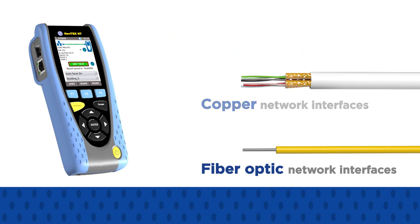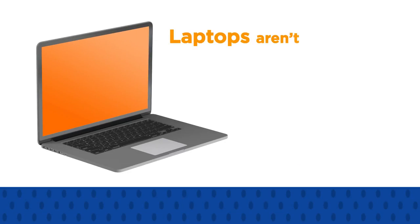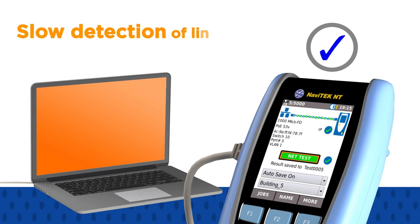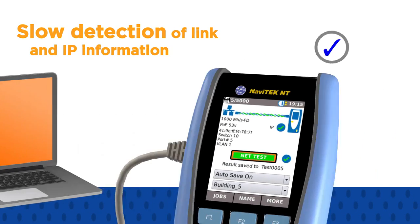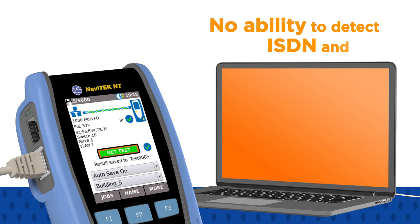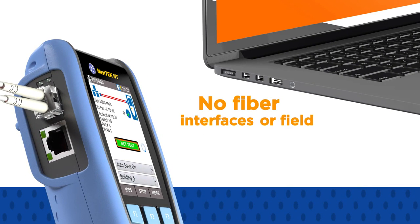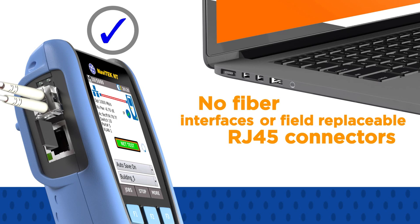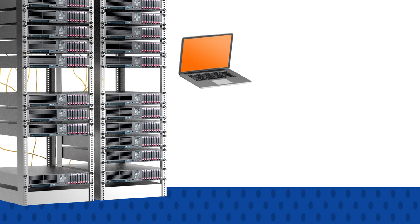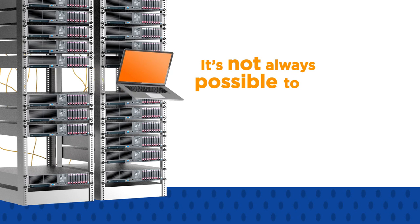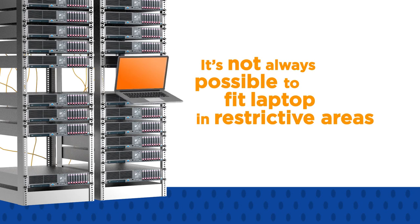For many of us it's tempting to turn to a laptop or a software tool for network troubleshooting. But laptops aren't always up to the job — with slow detection of link and IP information, no ability to detect services like ISDN and power over Ethernet, and no fiber interfaces or field replaceable RJ45 connectors. There's a practical issue too, because it's not always possible to fit your 17-inch laptop into the small restrictive areas where you'll find important cabling.